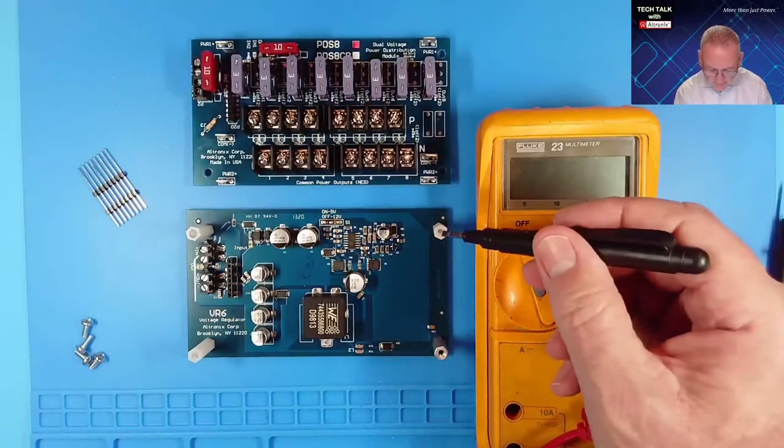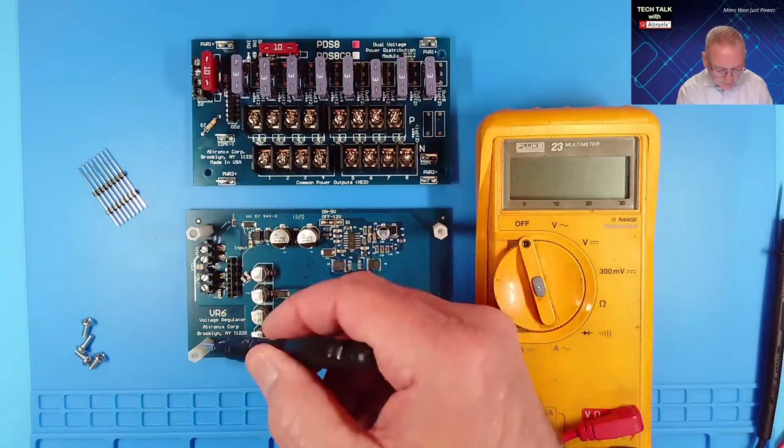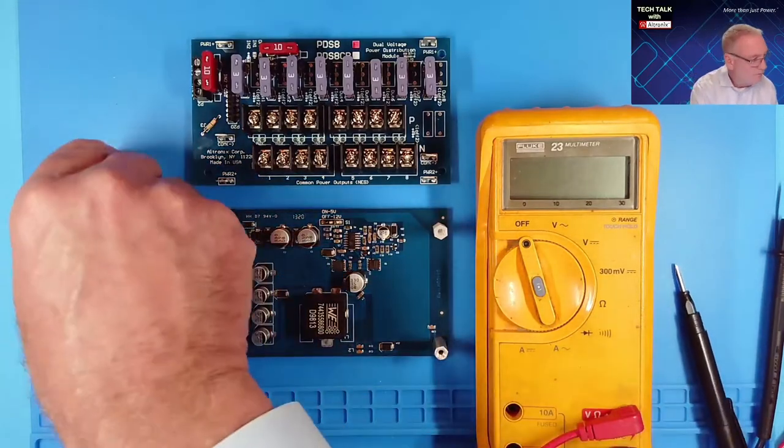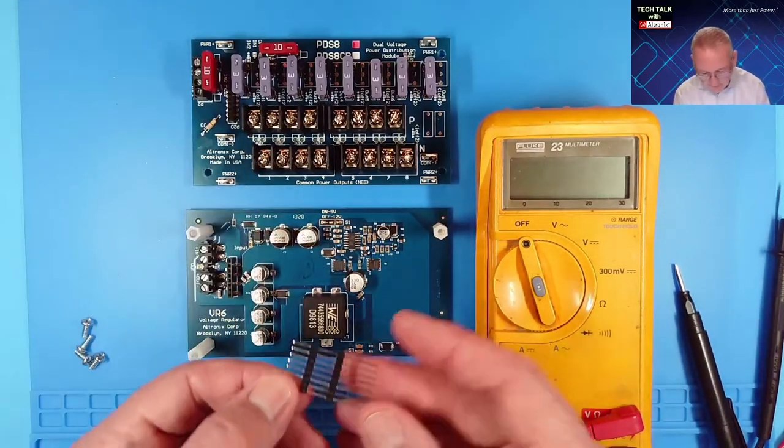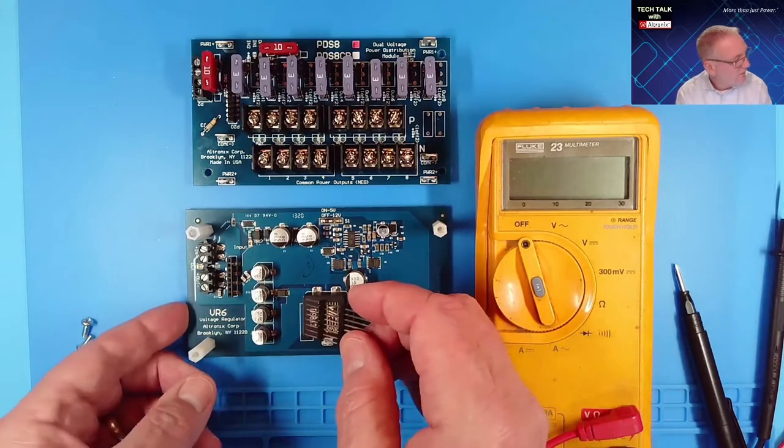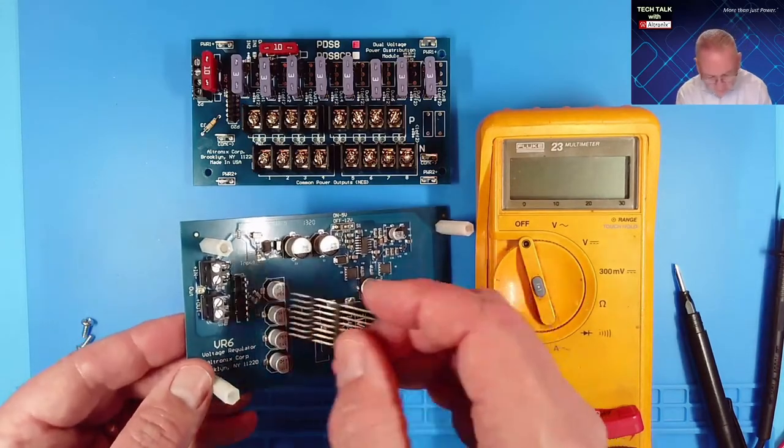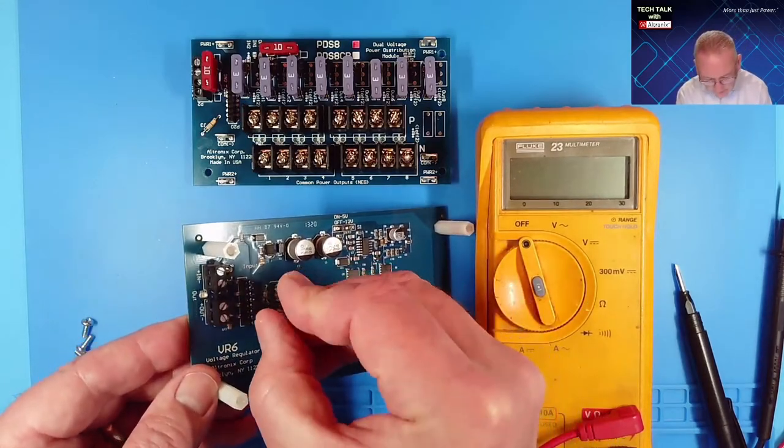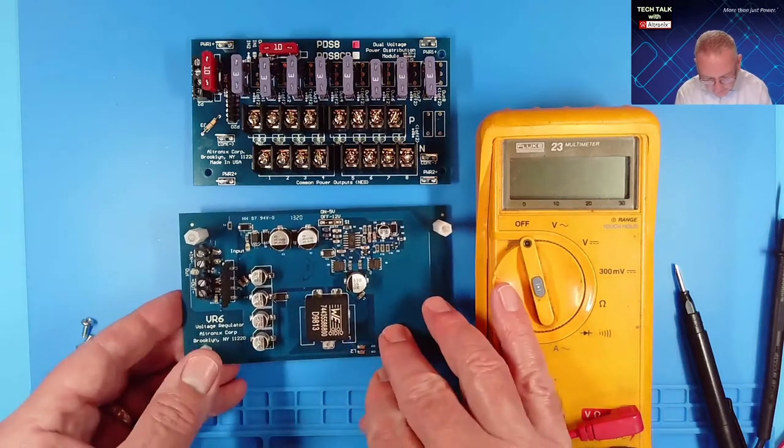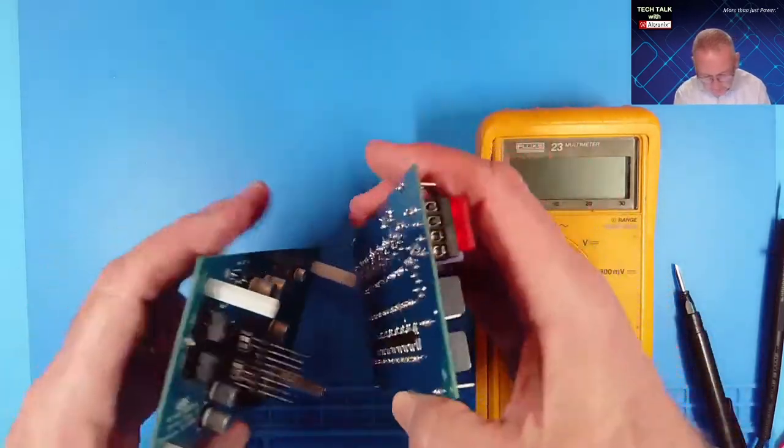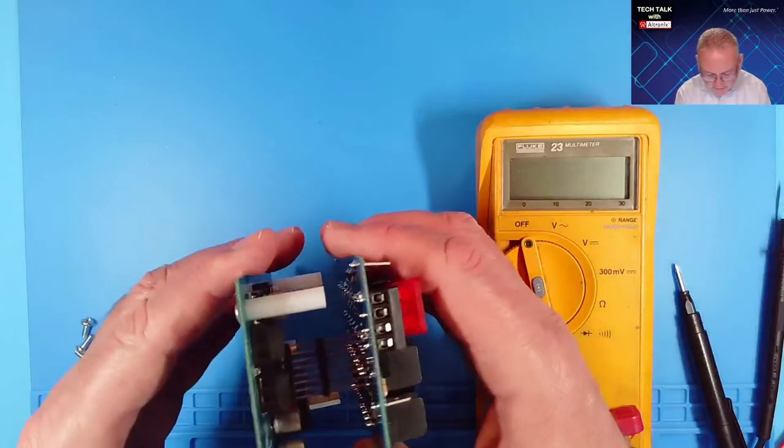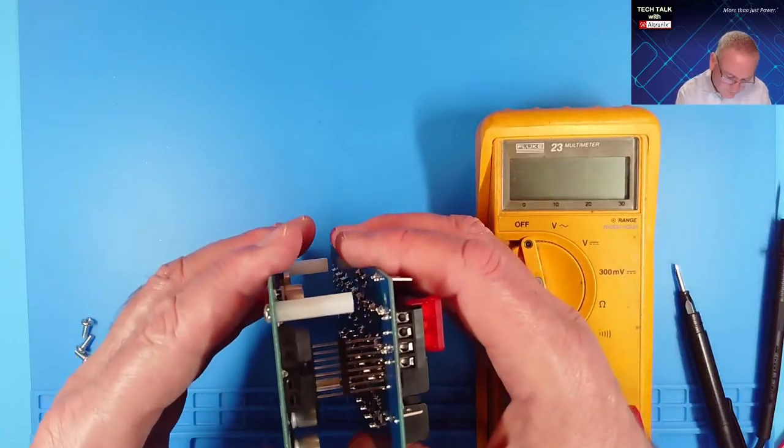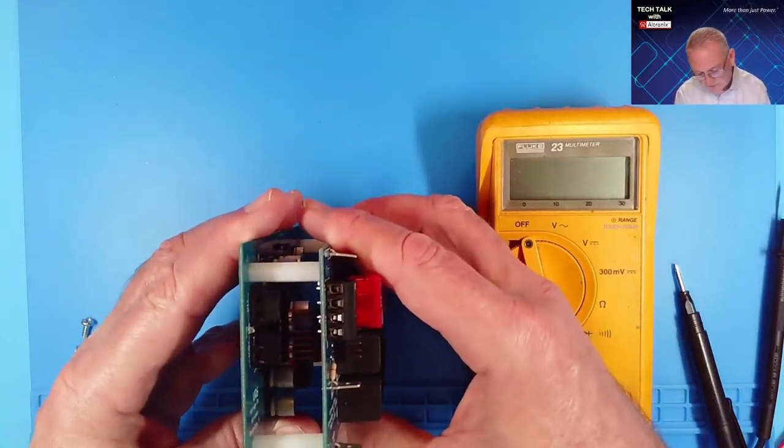Okay, well I've added the spacers onto the VR6. So what I'll do from here is take the 8-pin connector and insert that into the socket on the VR6. And then we'll take the PDS-8 and align those two boards, something like that, and then press them together.